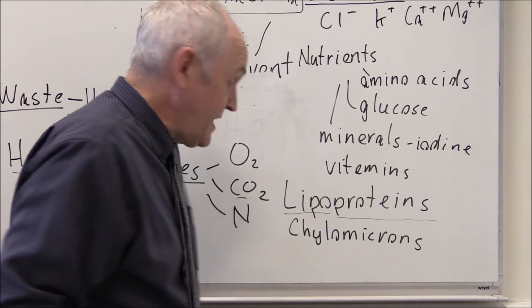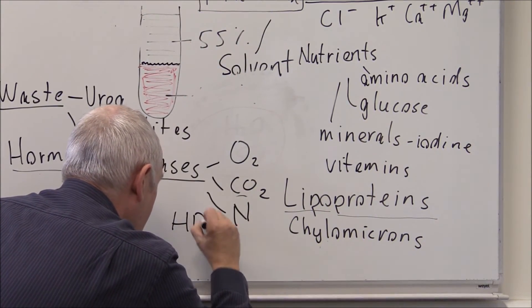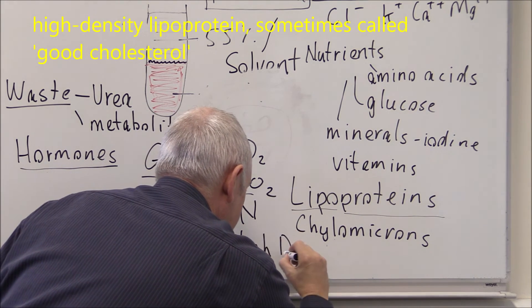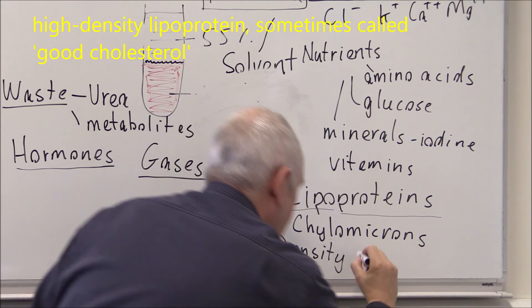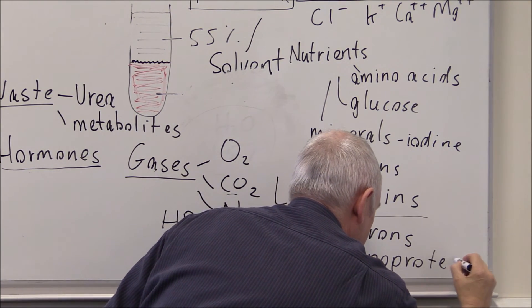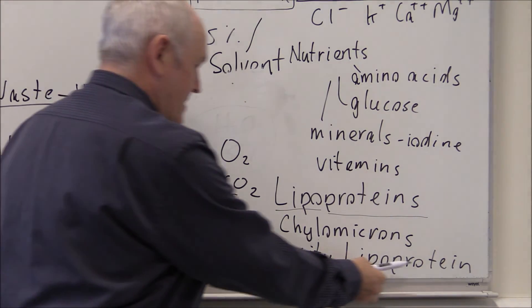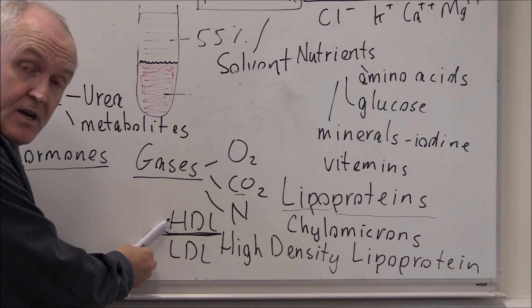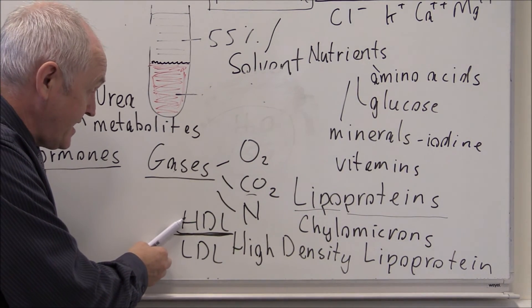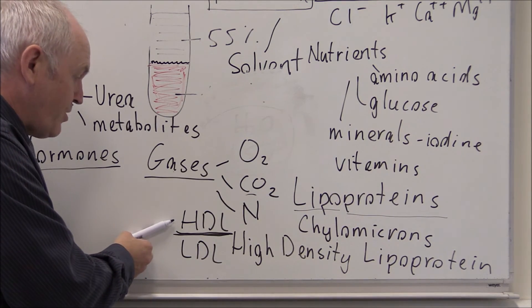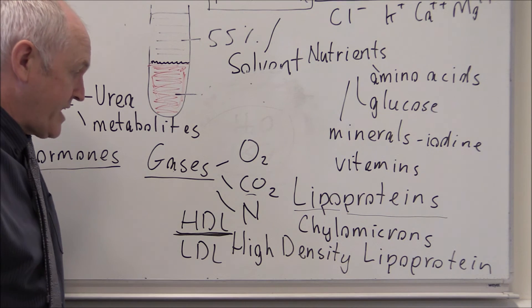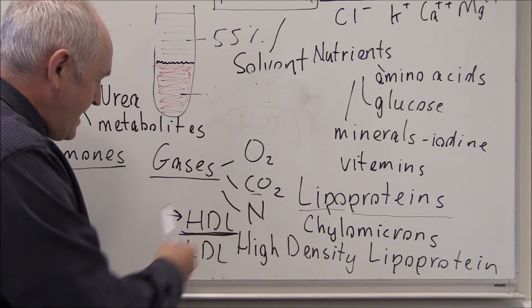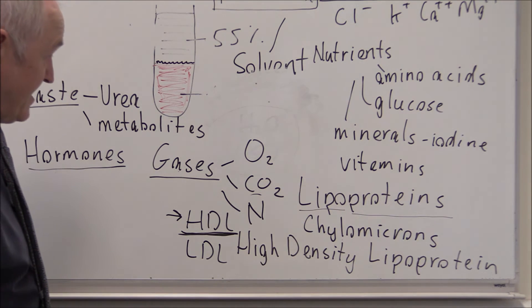There are also the cholesterol molecules - you might have heard of HDL and LDL. HDL is high-density lipoprotein, sometimes called 'H for helpful' or 'H for healthy' cholesterol, because HDL helps to transport fatty material from the blood into the liver where it can be biochemically processed. High levels of HDL are going to be healthy; low levels of HDL are going to be atherogenic and can lead to atherosclerosis.